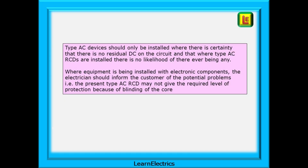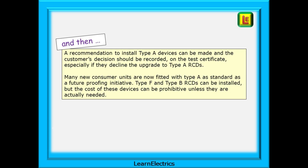Type AC devices should only be installed where there is certainty that there is no residual DC on the circuit and no likelihood of there ever being any. Where equipment with electronic components is being installed, the electrician should inform the customer of the potential problems — that the present type AC RCD may not give the required level of protection due to blinding of the core — and recommend installing type A devices, recording the customer's decision on the test certificate, especially if they decline the upgrade. Many consumer units are now fitted with type A as standard as a future-proofing initiative. Type F and type B RCDs can be installed but the cost can be prohibitive unless they are actually needed.